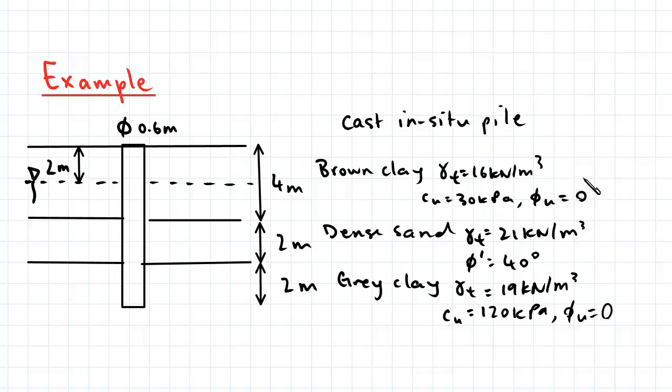The properties of each soil layer are given here. We also have a water table at a depth of two meters below the surface, and the pile diameter is 0.6 meters.